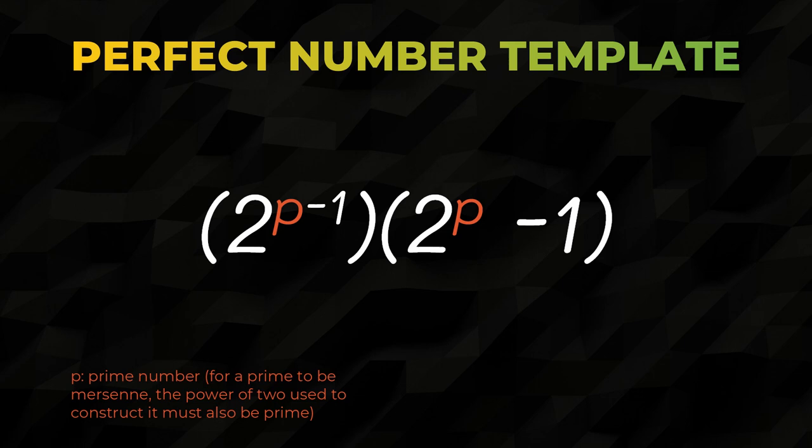The second one is the Mersenne prime. By definition, it's prime and is 1 less than a power of 2. As such, we'll call it part m for Mersenne. The first factor is the power of 2 that precedes the Mersenne prime. We'll call that one part t.